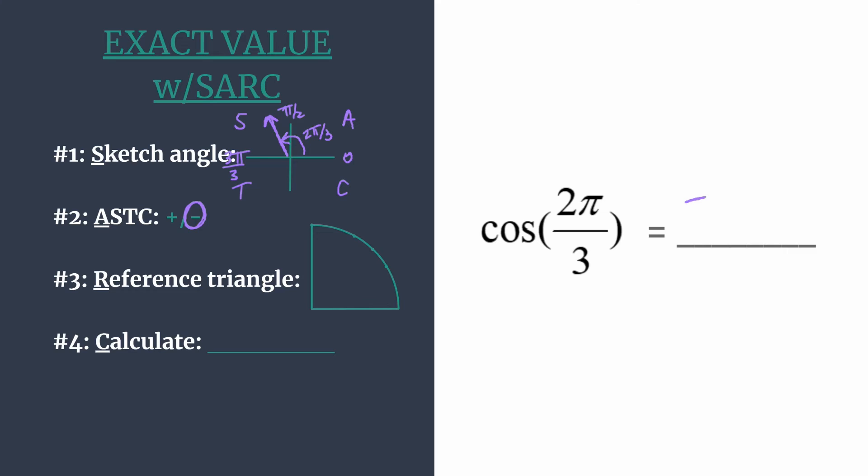Okay, so now we can move on to step 3, where we find the reference angle and the reference triangle and coordinates that we'll work with. So our reference angle is simply the amount of rotation from our terminal side back to the x-axis.